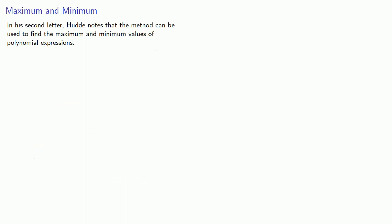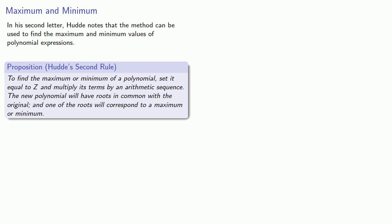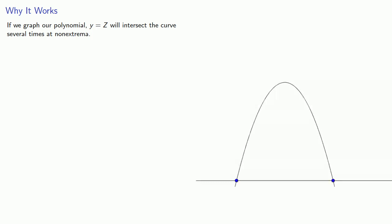In a second letter, Hudde notes that the method can be used to find the maximum and minimum values of polynomial expressions. So, to find the maximum or minimum of a polynomial, set it equal to z and multiply its terms by an arithmetic sequence. The new polynomial will have roots in common with the original. And one of the roots will correspond to a maximum or minimum.